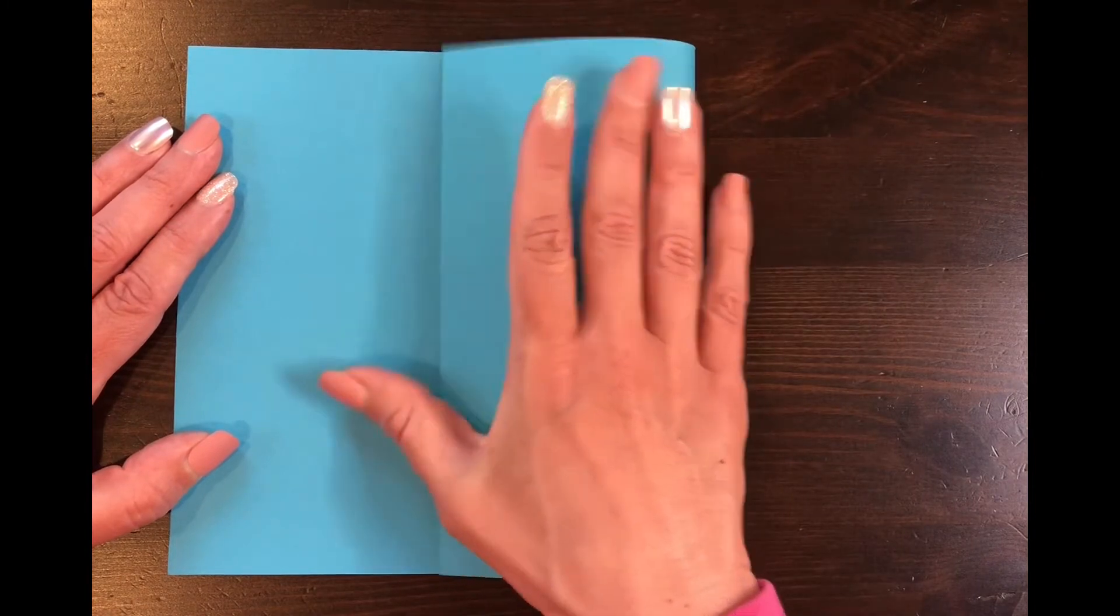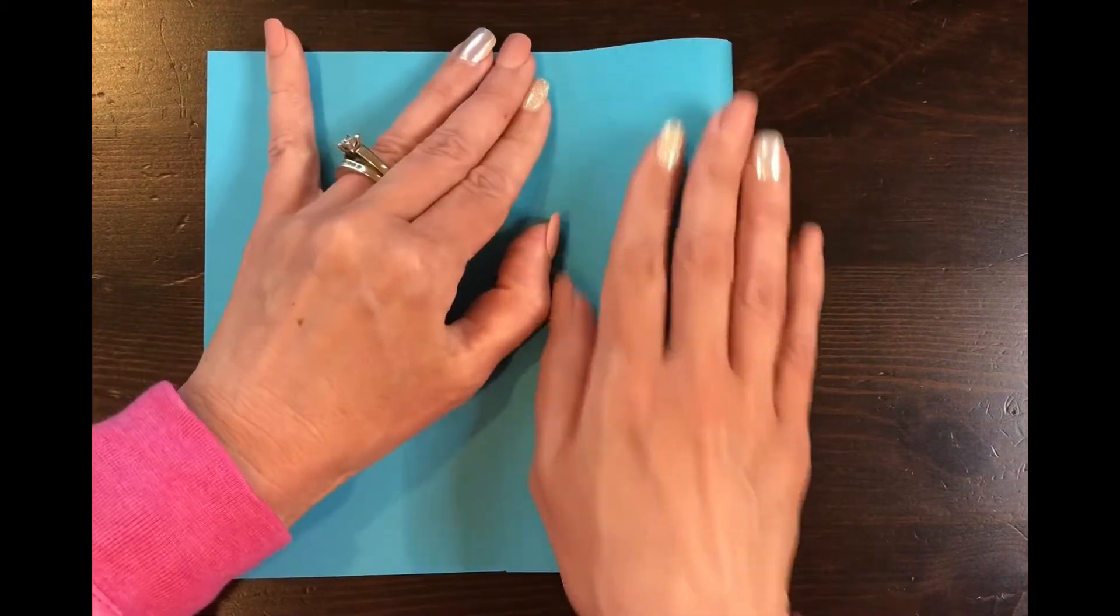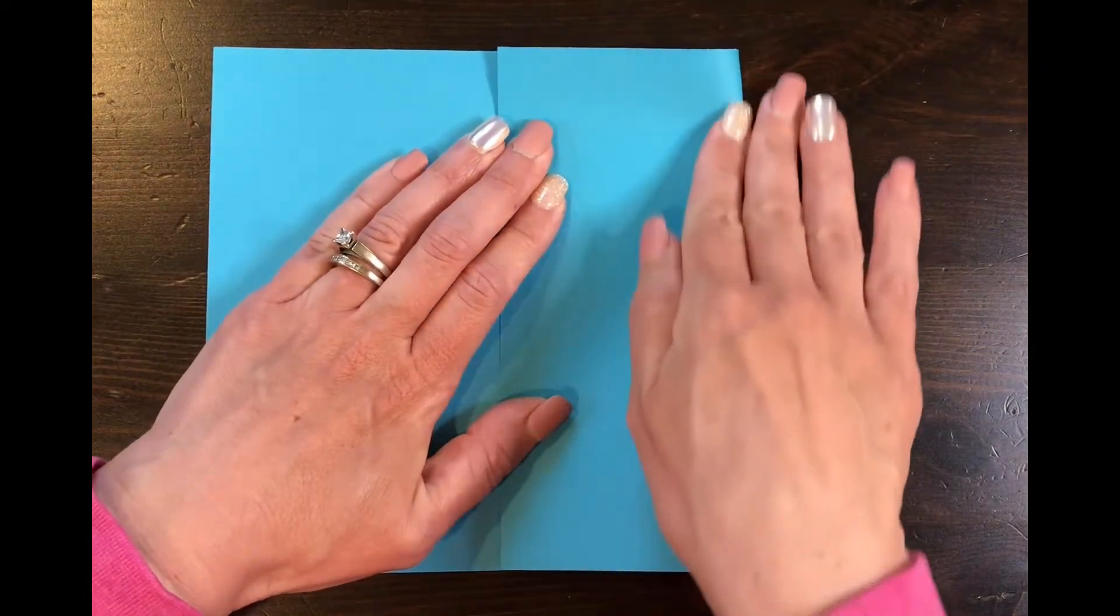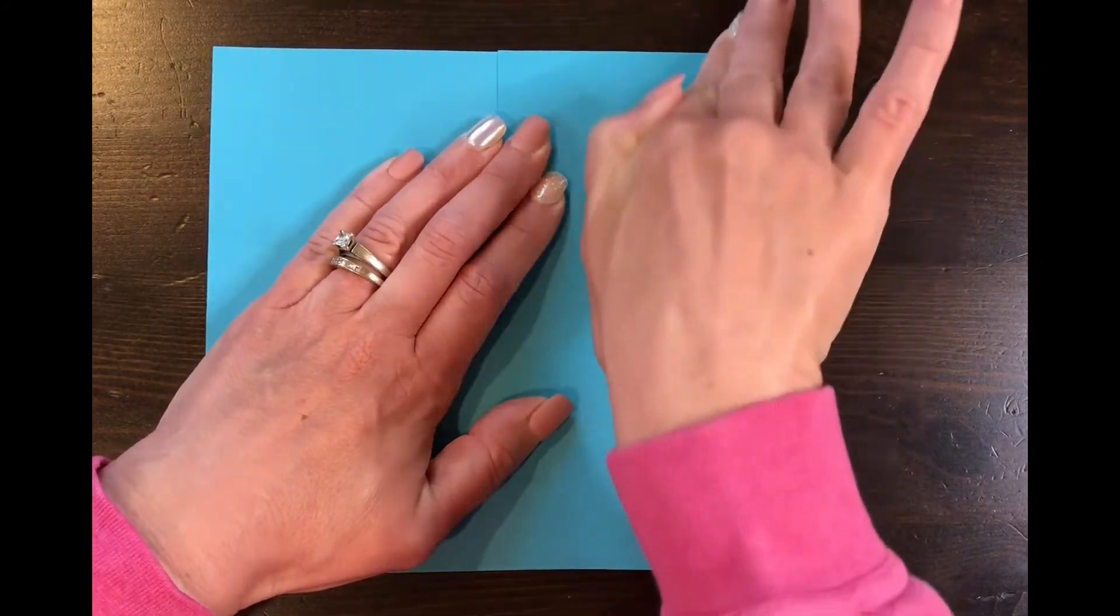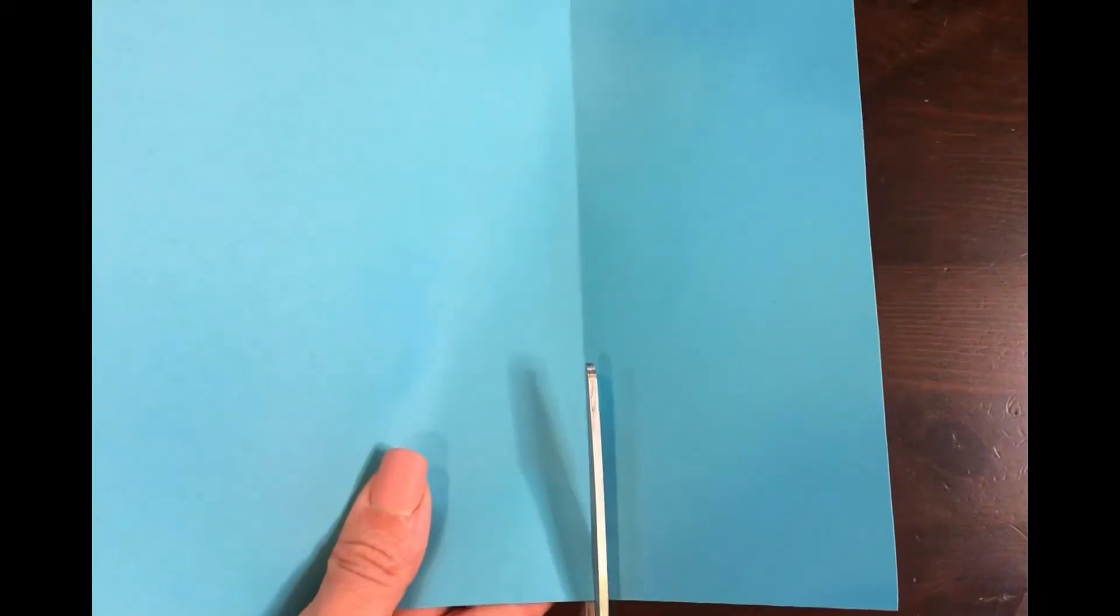Look to see, does it look like a square? If it does, then you can press down really hard over here. Press, press, press. Then that gives you, when you open it up, a line where you can cut on to turn that rectangle into a square. So then I'll pick this up and I'll cut all the way down that line, and now I have a square.